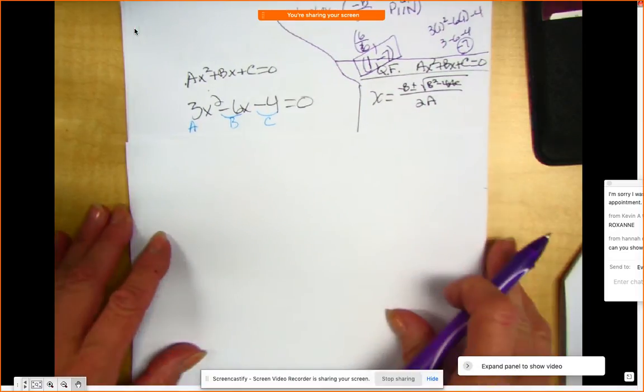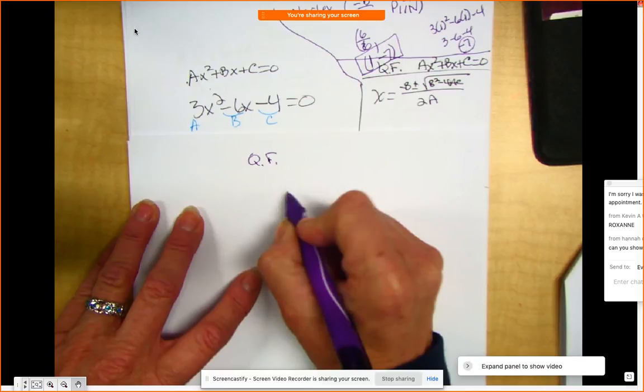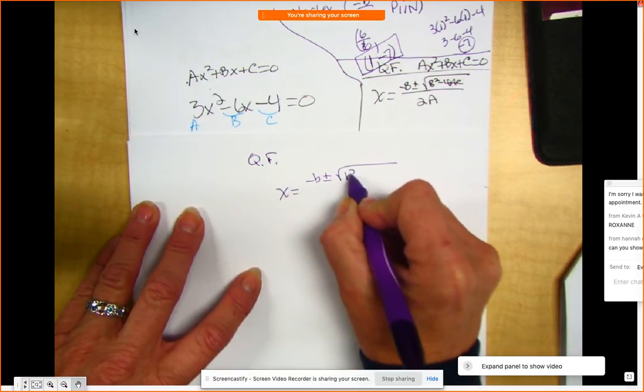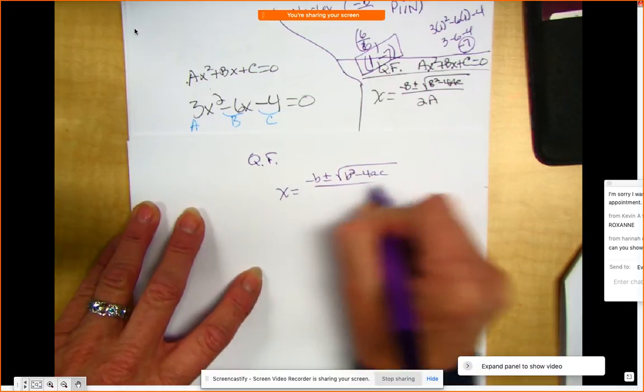The quadratic formula is x equals opposite of b plus or minus square root of b squared minus 4ac divided by 2a.